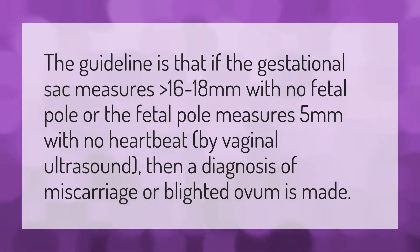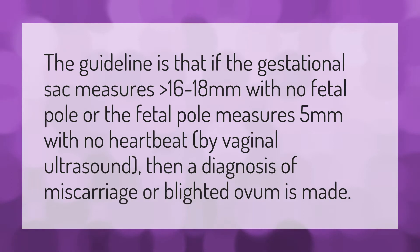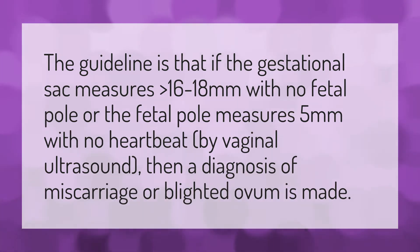The guideline is that if the gestational sac measures greater than 16 to 18 millimeters with no fetal pole, or the fetal pole measures five millimeters with no heartbeat by vaginal ultrasound, then a diagnosis of miscarriage or blighted ovum is made.